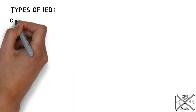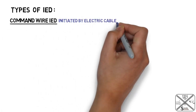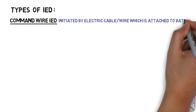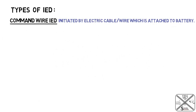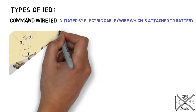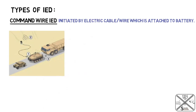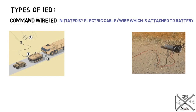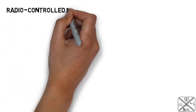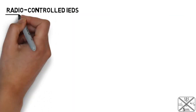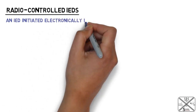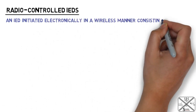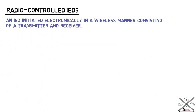Moving to types of IEDs. First, we have the command wire IED, which is initiated by an electric cable or wire attached to a battery and is often buried under roads, walls, and buildings, making it very difficult to detect. Second is the radio control IED, which is initiated electronically in a wireless manner, consisting of a transmitter and a receiver.